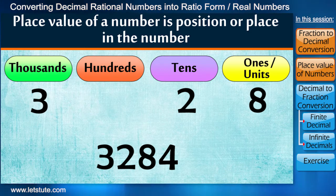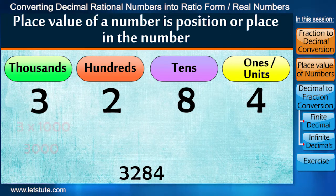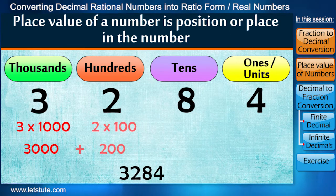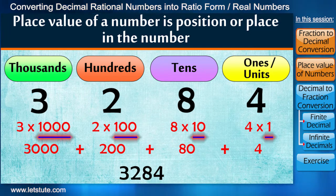This simply means that we have 3 thousands, 2 hundreds, 8 tens, and 4 ones. Notice that here each place has a value ten times the place to its right side.